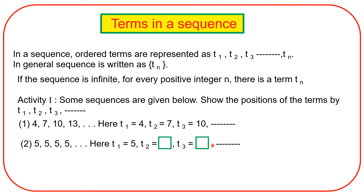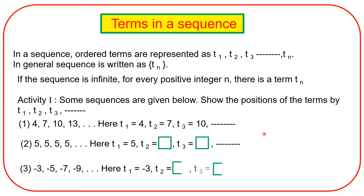Next two examples. In the second example, all terms are 5u, so T1, T2, and T3 are each equal to 5u. In the third example, T2 is equal to minus 5u and T3 is equal to minus 7u. Write down this activity and all these terms.